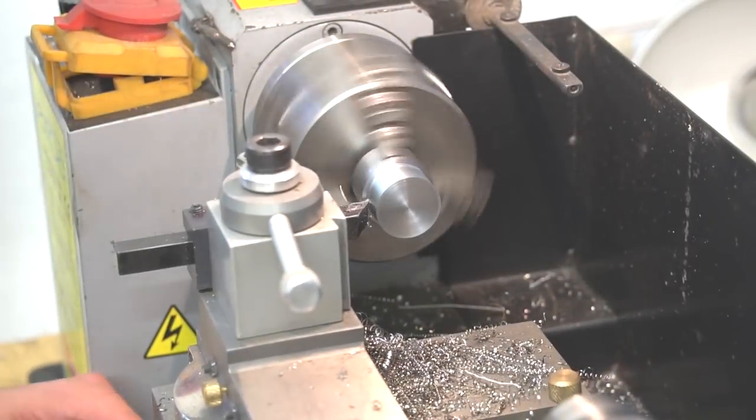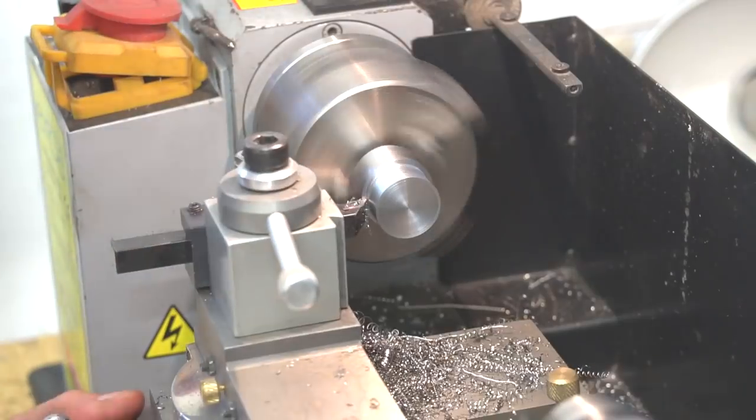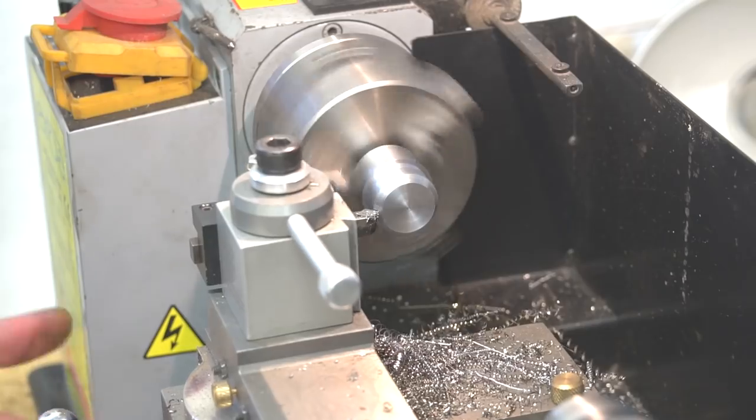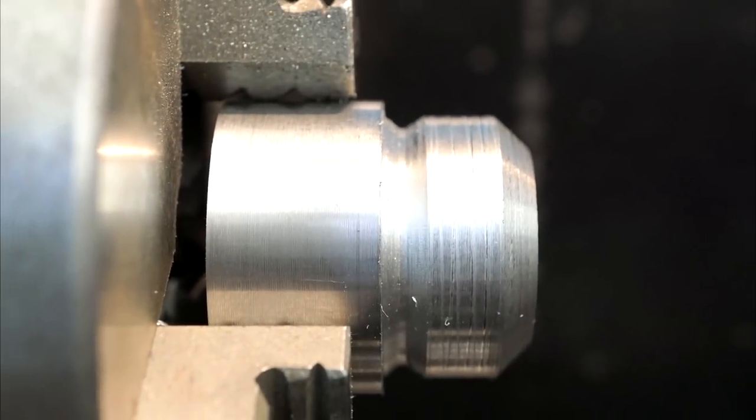Then I'm tapering the conus on both sides of the thread. I make this manually and didn't set a third axis of the lathe. After tapering, the part looks like that.